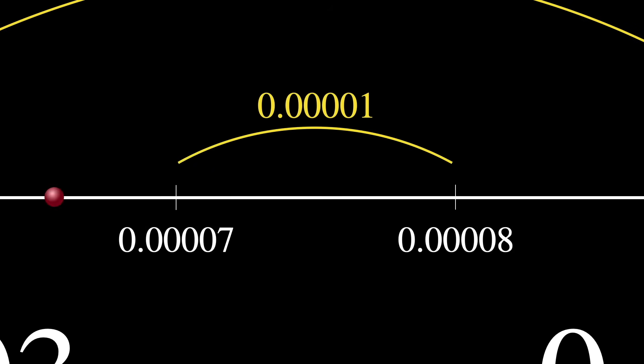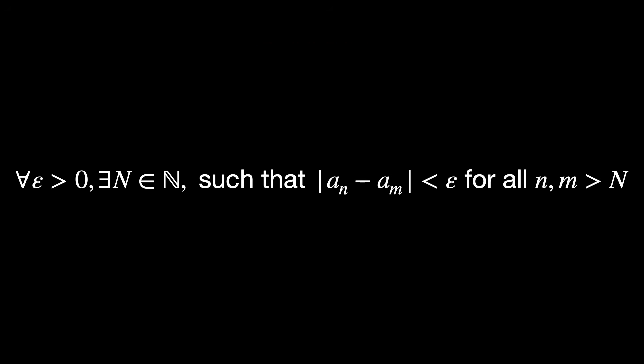So eventually, the sequence settles in a tight cluster, even if we don't know exactly where it's going. Rigorously, the definition of a Cauchy sequence is expressed as this.